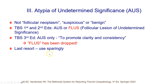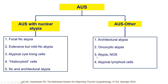AUS should be a last resort and used sparingly. It is important to understand that when there is AUS with nuclear atypia, the risk of malignancy has been shown to be higher. Therefore it is important to indicate whether there is nuclear atypia or whether it is just AUS other, meaning findings are those of other types of atypia.